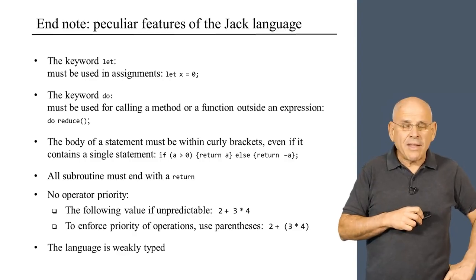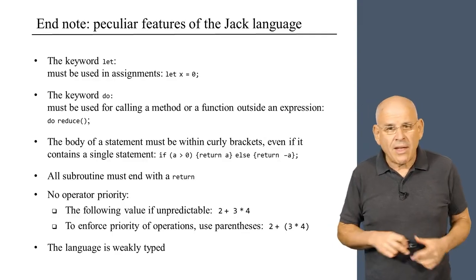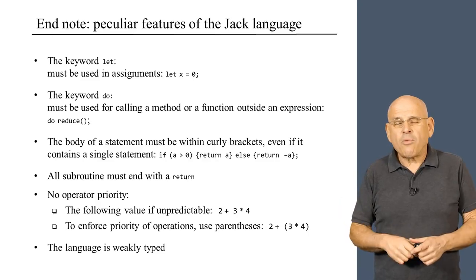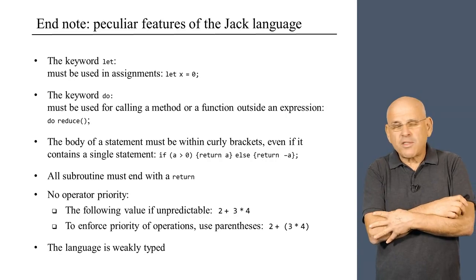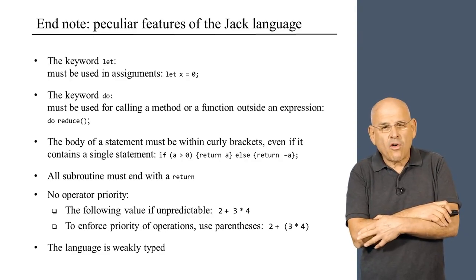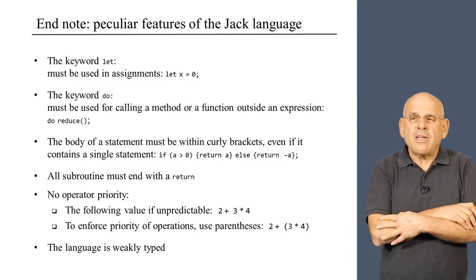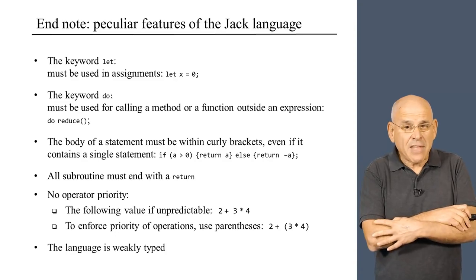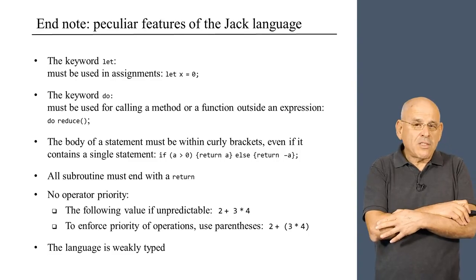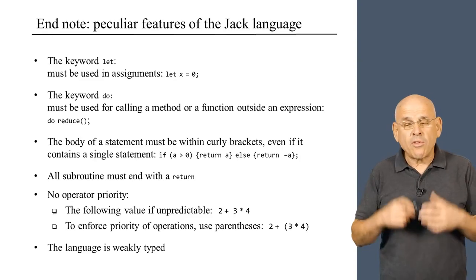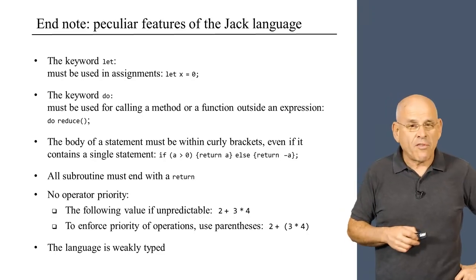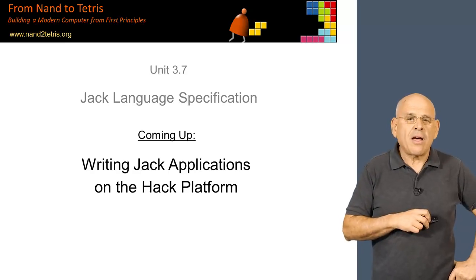Finally, I want to remind you that Jack is a weakly typed language, much more weakly typed than industrial strength languages. This makes it very powerful because the programmer can have considerable control of the host hardware using pointers that can go wild, as we will do with great pleasure in the next modules. Obviously this is very unsafe because you can bring the host machine to its knees. Yet in a course like NAND to Tetris, this is a very desirable feature because we want to treat the language and surrounding hardware as an open lab in which you are allowed to do whatever you please.